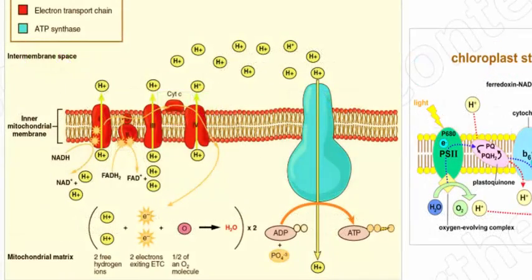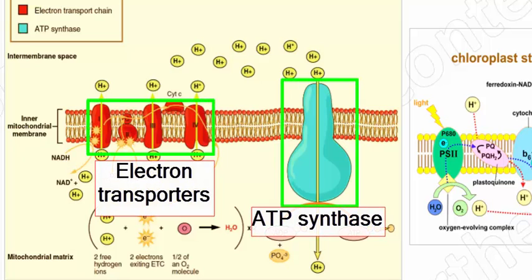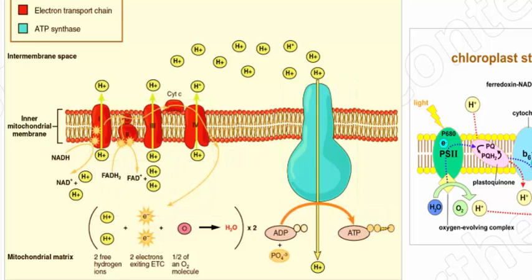Biological membranes or plasma membranes actually circumvent this problem by providing a cell with an extensive framework — what we call a scaffolding — within which components can be ordered or placed in fixed positions for effective interactions. And the example on the screen right there is just that.